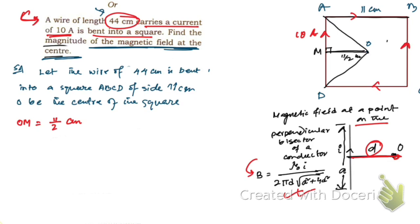Now, applying the right-hand thumb rule — if you hold side AB with your right hand thumb pointing along the current, the remaining fingers wrap around the conductor going into the page. If you check all four sides of the square, the magnetic field due to each side at center O points in the same direction — into the page. So the resultant magnetic field is simply the sum of the magnitudes from all four sides.